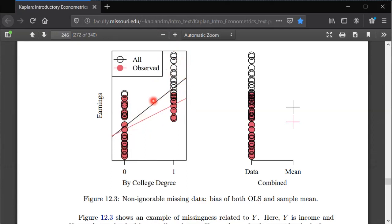So this was just an example to help illustrate how non-ignorable missing data, in this case where whether or not the value is missing depends on the value itself, the earnings value, how that can lead to bias both of unconditional mean and regression slope estimators.